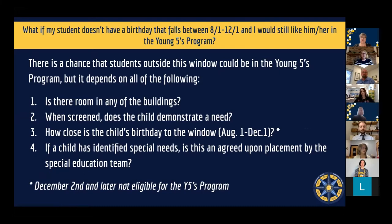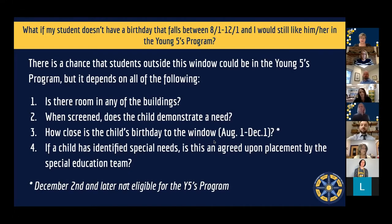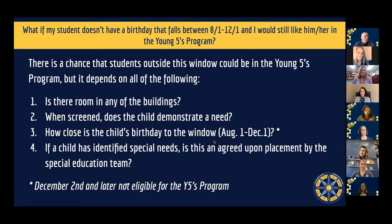If your student's birthday doesn't fall between August 1 and December 1, there is some chance they could still have availability in the Young Fives program, depending on: whether there is room available in any building, whether the child demonstrates a need for Young Fives over Kindergarten during screening, how close their birthday is to the cutoff, and whether the student has identified IEP needs. Some students with IEPs can be placed right in Kindergarten with their accommodations.